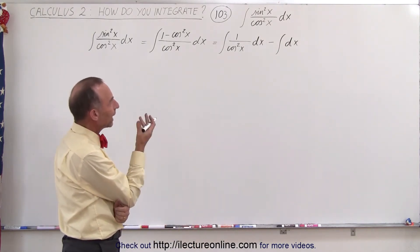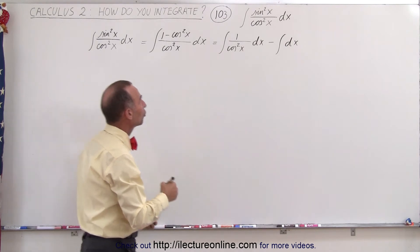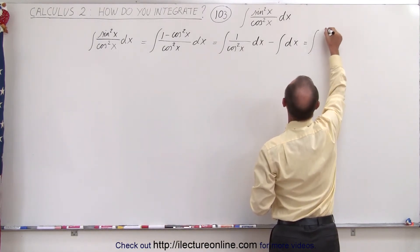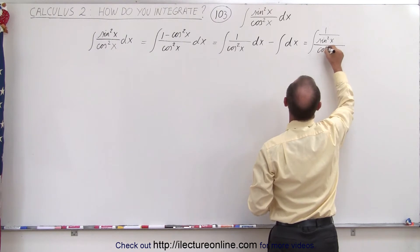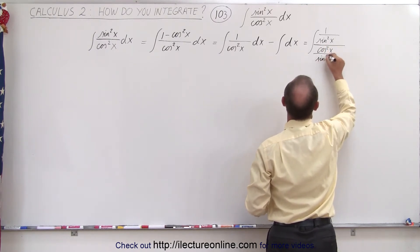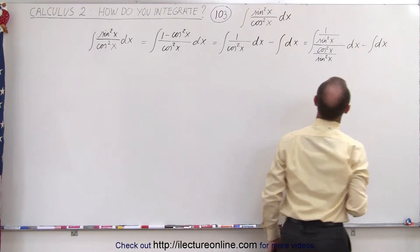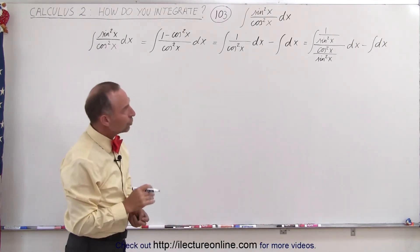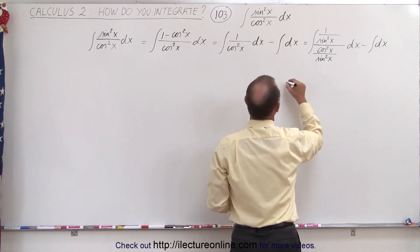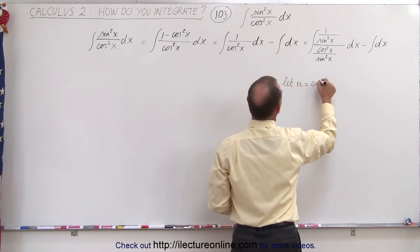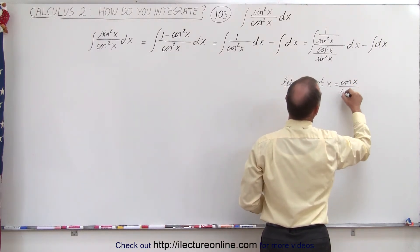The second integral is easy to integrate, but for the first integral we need to use a trick. We're going to divide both the numerator and the denominator by the sine square of x. This can be written as the integral of 1 over sine square of x, divided by cosine square of x divided by sine square of x, times dx, minus the integral of dx. The cosine divided by the sine is the cotangent, so we let u equal the cotangent of x, which is the cosine of x divided by the sine of x.